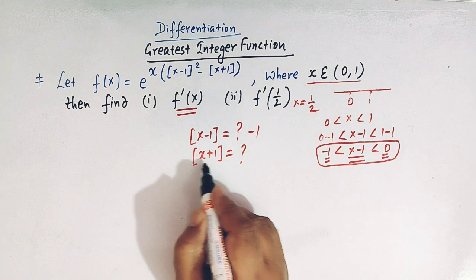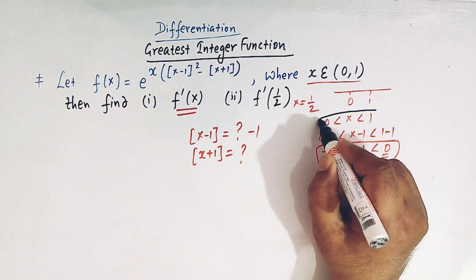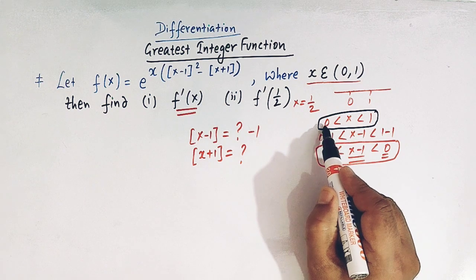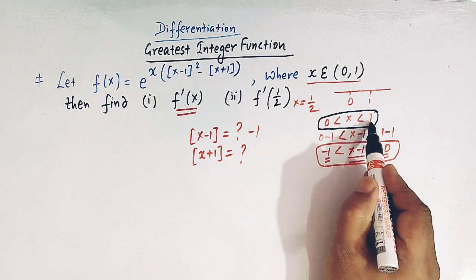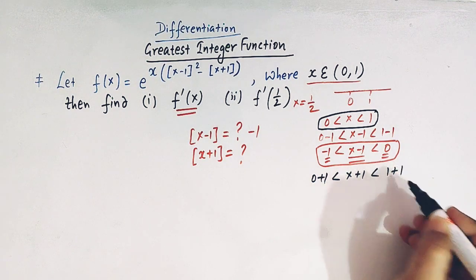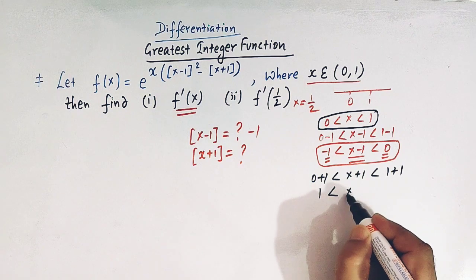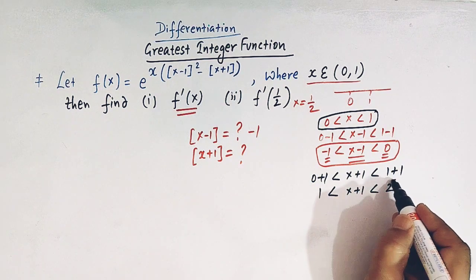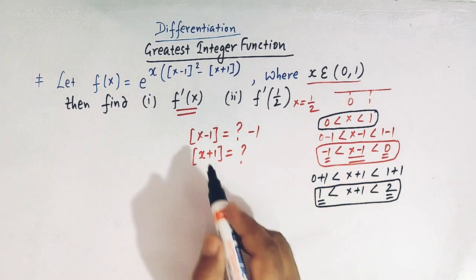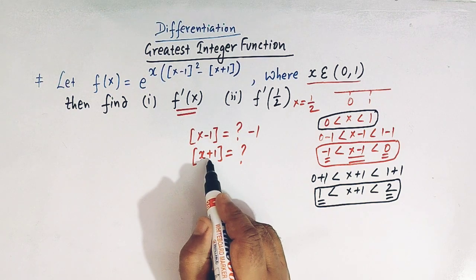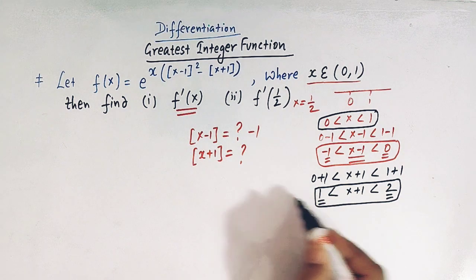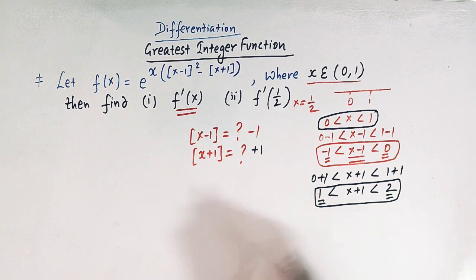Now to get the value of greatest integer of x plus 1, we add 1 throughout the inequality. We get 1 less than x plus 1 less than 2. So x plus 1 lies between 1 and 2. From the definition of the greatest integer function, the value of greatest integer of x plus 1 is plus 1.